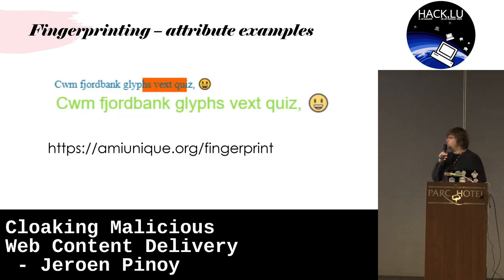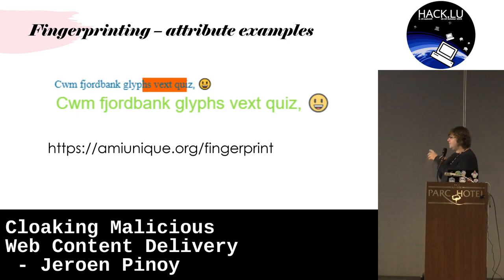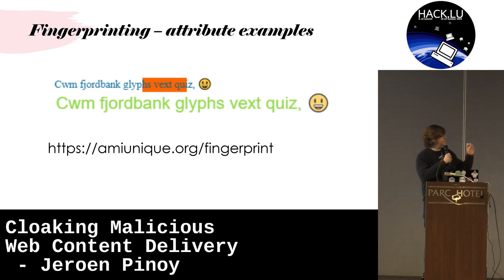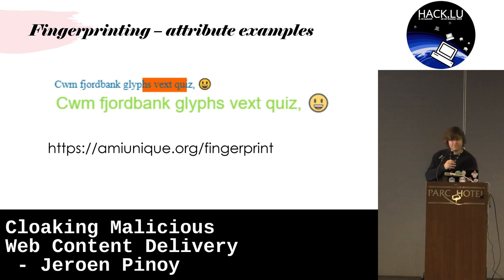What do these attributes look like? This is an example of one — it's called the HTML canvas image. Some researchers found that if you create particular images, they depend on your hardware and your browser settings. By generating this image with HTML and then fetching the data and sending it back to the server via JavaScript, you have something that uniquely identifies the browser, or if it's linked to you, also you as a person.